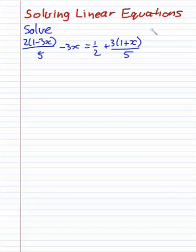Let's do the hardest possible example that we can find of a linear equation to be solved. You won't have anything harder than this. This is as hard as they get at school level. So looking at this hideous equation, 2 bracket 1 minus 3x all on 5, minus 3x equals 1 half plus 3 bracket 1 plus x on 5, you may be thinking, where on earth do I start?